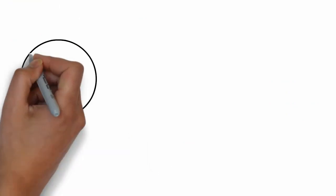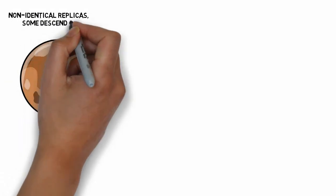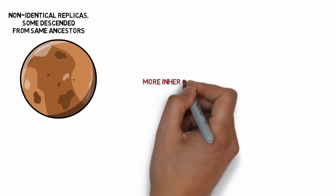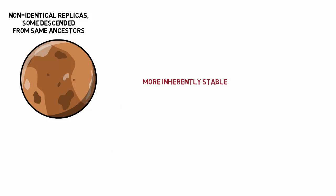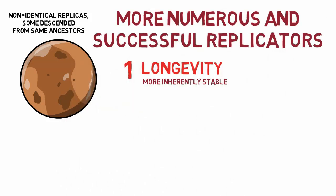Due to the errors, soon the primeval soup became filled with non-identical replicators, but some were descended from the same ancestors. We can assume some were more inherently stable than others and had better longevity. Replicators with the property of high longevity tended to become more numerous, and hence there would be an evolutionary trend towards replicators with greater longevity.